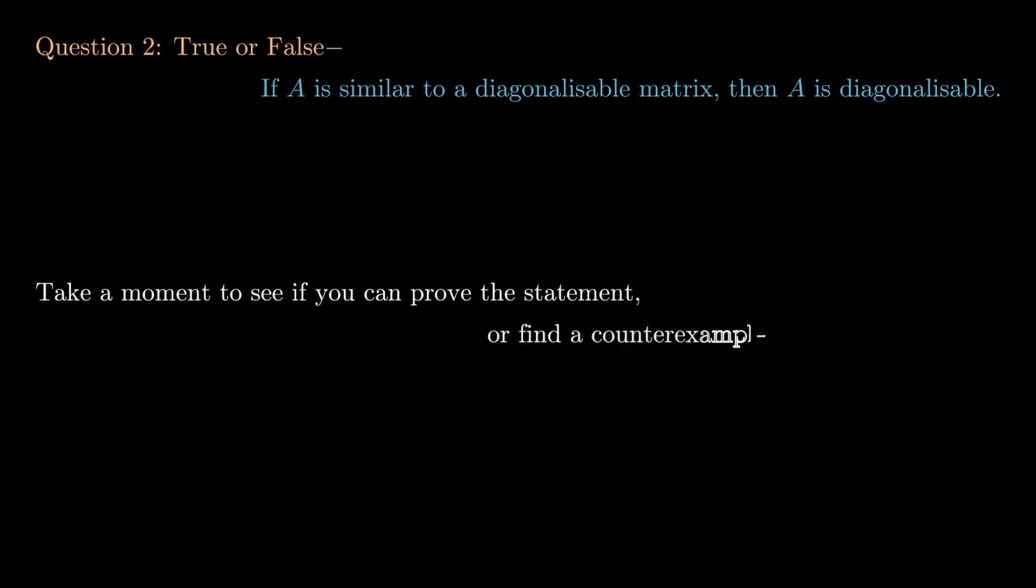Recall that two matrices A and B are said to be similar if there exists an invertible matrix P such that A = P^(-1)BP. As an additional fun question,